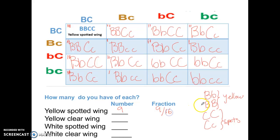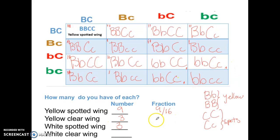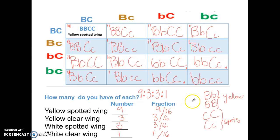So nine out of 16 are yellow with spots. Since there were 12 total yellow birds and nine had spots, the remaining three are yellow with clear wings — three out of 16. For white with spots: there are four white birds total, and three of those have spots — three out of 16. The last one is white and clear — only one out of 16. So the ratio is nine to three to three to one.